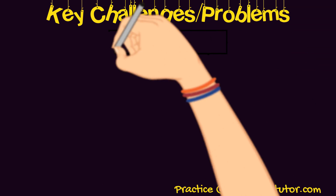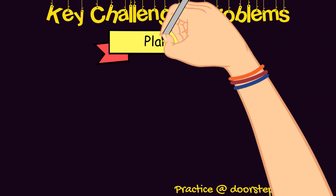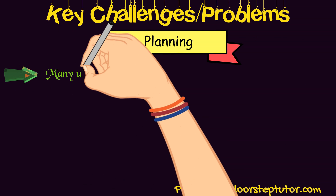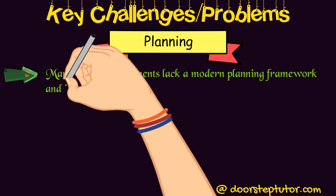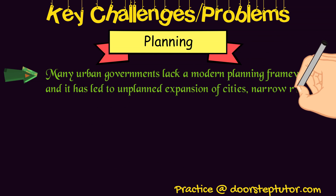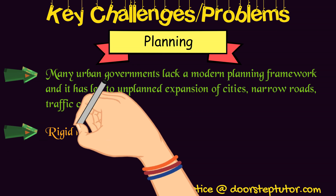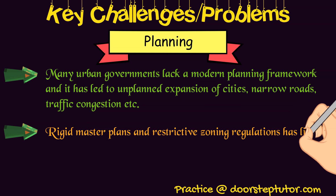The second challenge is planning. Many urban governments lack a modern planning framework, which has led to unplanned expansion of cities, narrower roads, traffic congestion, and water logging.